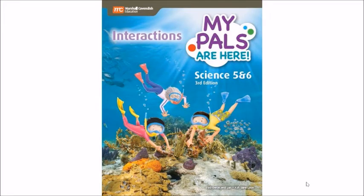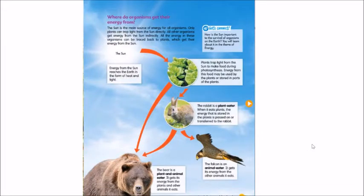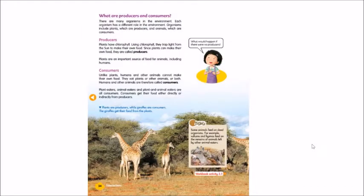Hi, this is Mr. Yeo. Today we are going to go through the book on interactions. We have covered food chains and food webs, but I would like to bring your attention to these two features: where do organisms get their energy from, and what are producers and consumers.